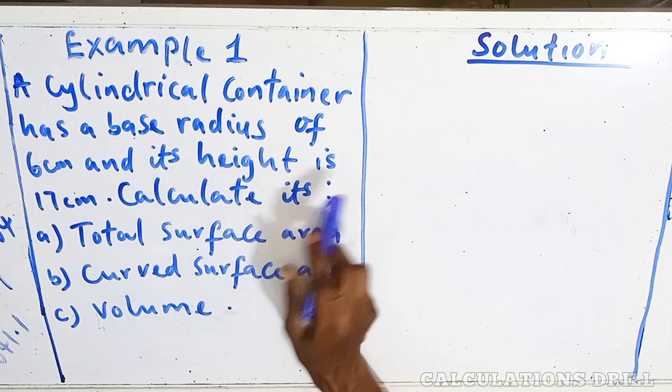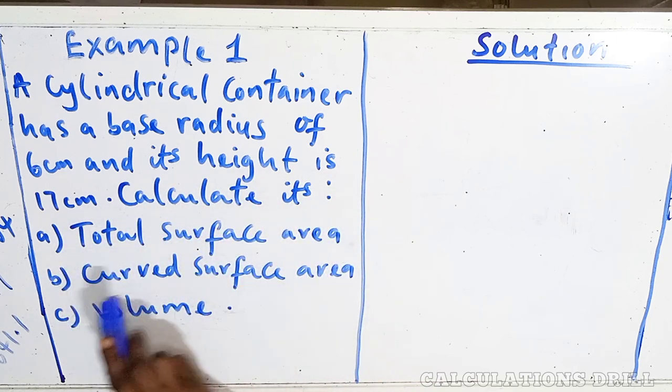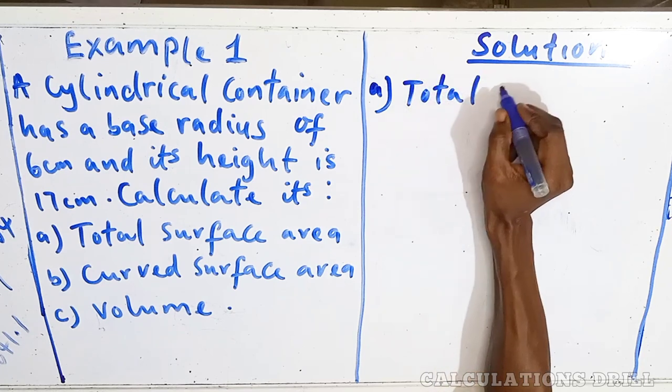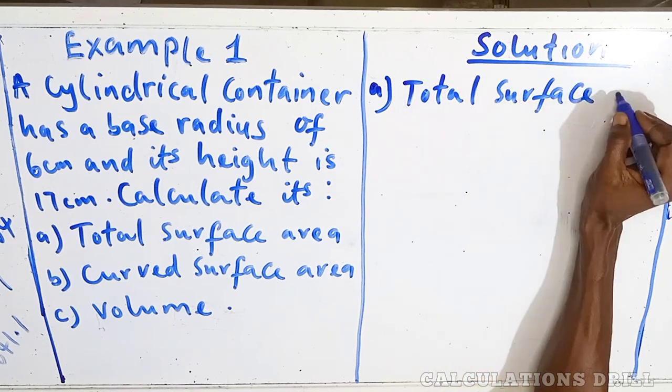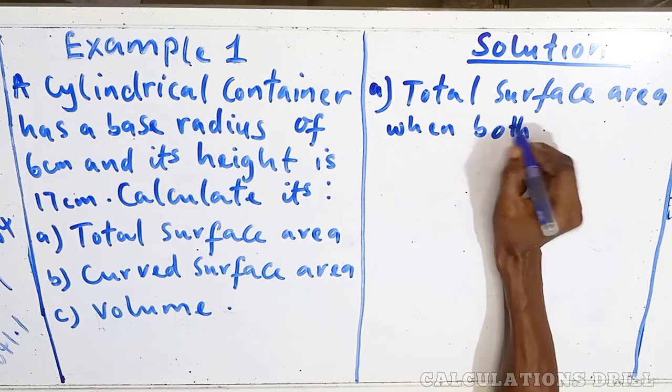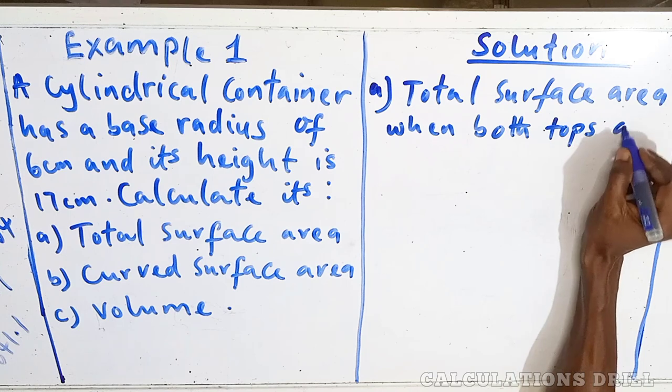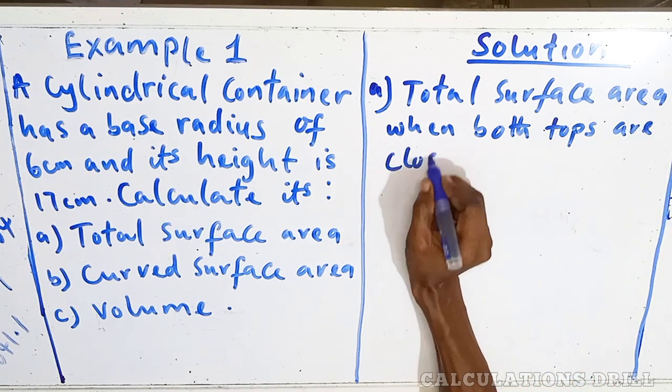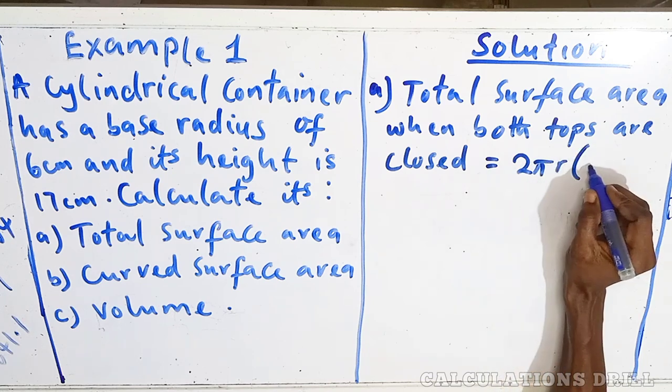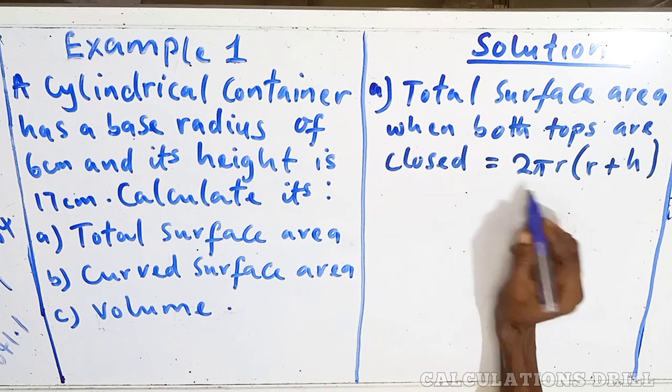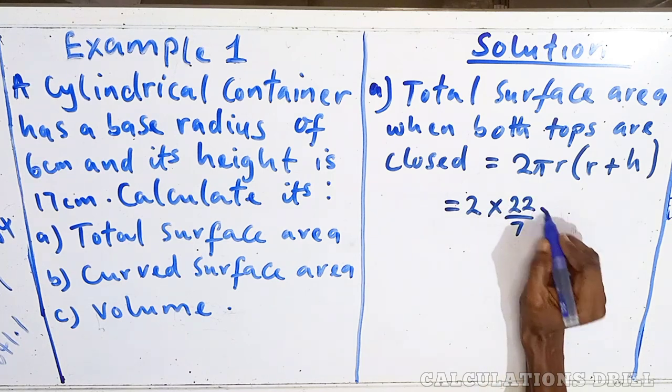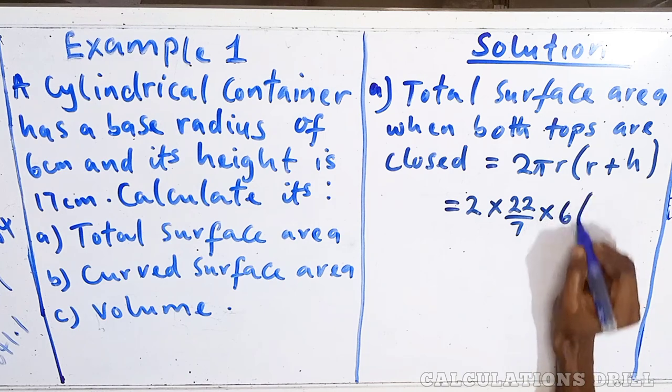Now, let's see example. In this example, we are asked to calculate the total surface area, curved surface area, and the volume. A, total surface area. Remember our formula. Here, we are going to use the formula for calculating total surface area when both tops are closed. And the formula is equal to 2πr(r + h). Take note of that. So, from the question, our radius is given, and our height is equally given. So, using the formula now, you can say it's 2 times 22/7 times 6.